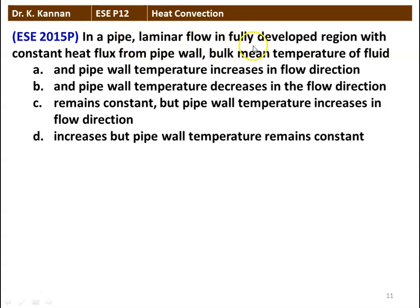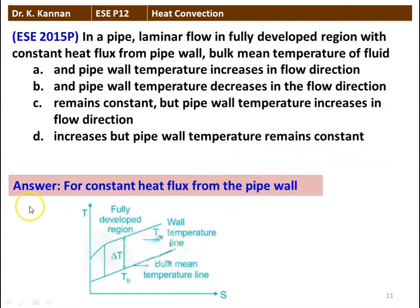Next question: in a pipeline with laminar fully developed flow and constant heat flux from the pipe wall, the bulk mean temperature and pipe wall temperature — both increase, both decrease, bulk mean stays constant while wall increases, or bulk mean increases while wall remains constant. For constant heat flux conditions, both the bulk mean temperature and the wall temperature increase from entrance to exit in the flow direction. The correct answer is that both temperatures increase.